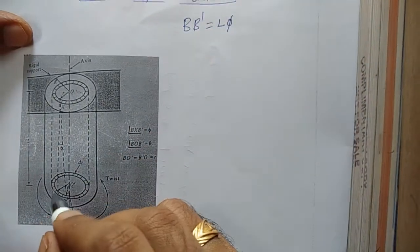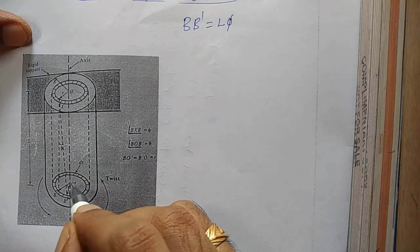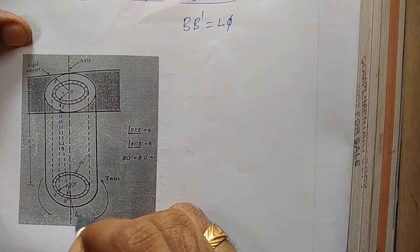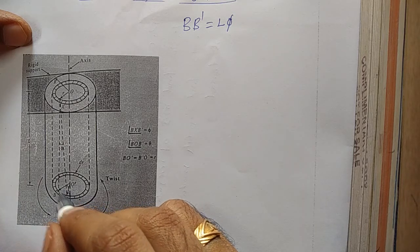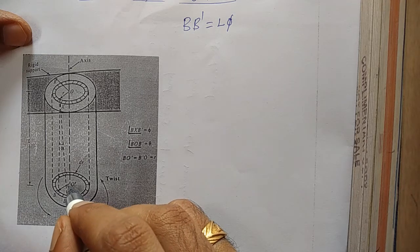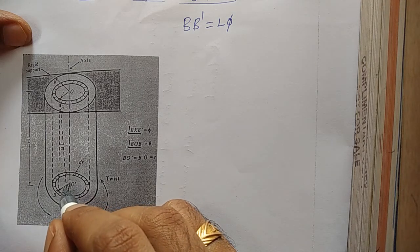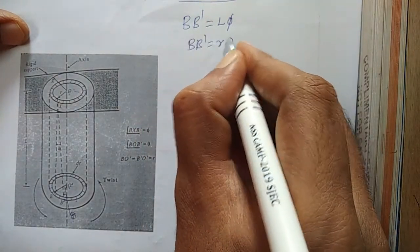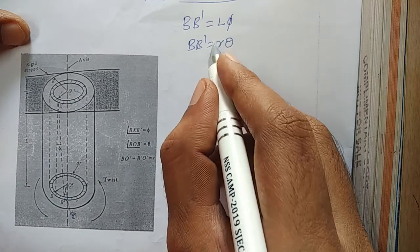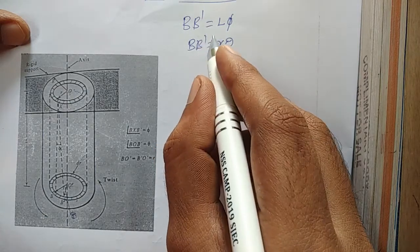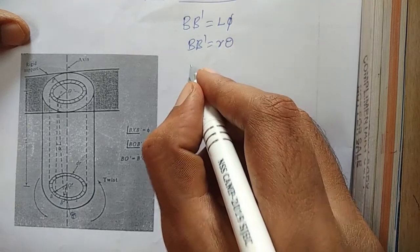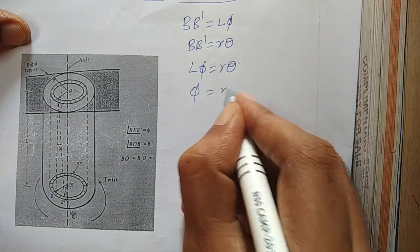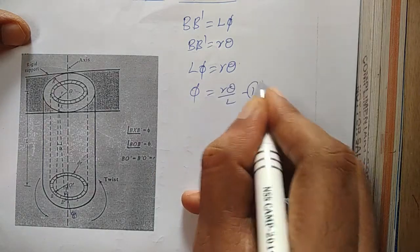Now, the angle BO'B' is denoted by theta. Then the arc length BB' is equal to the radius r into theta, so BB' = rθ. Since the left-hand side of both equations is the same, we can write Lφ = rθ, or φ = rθ/L. Let this be equation number 1.